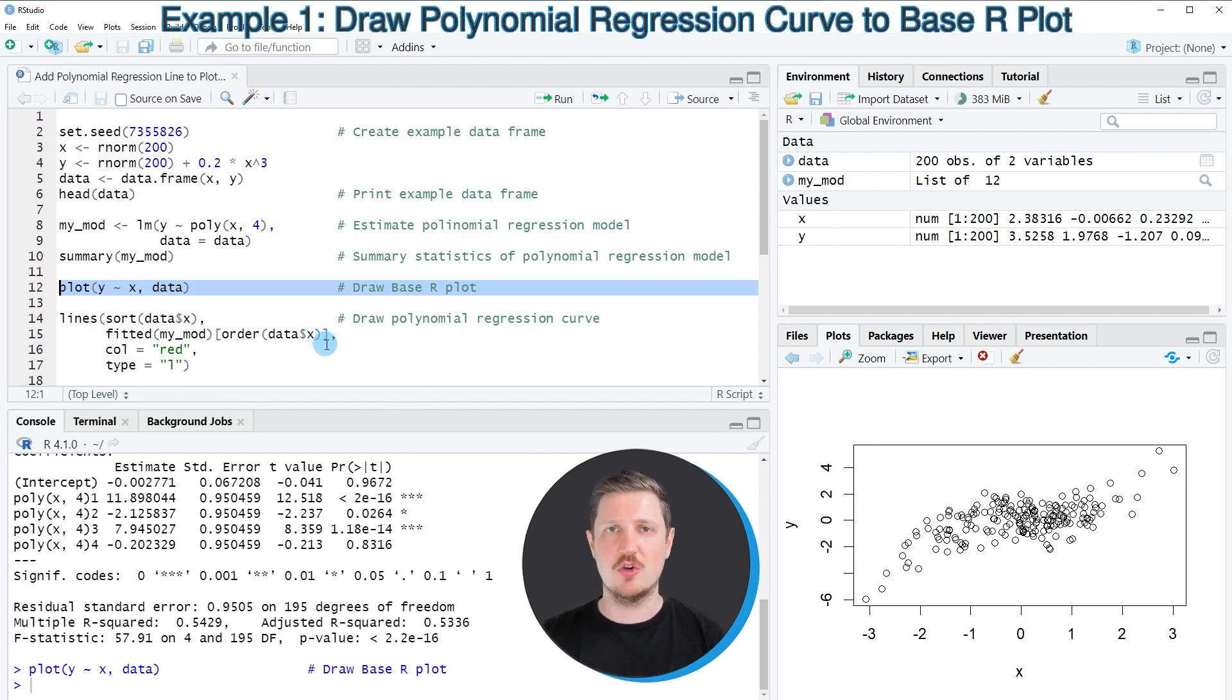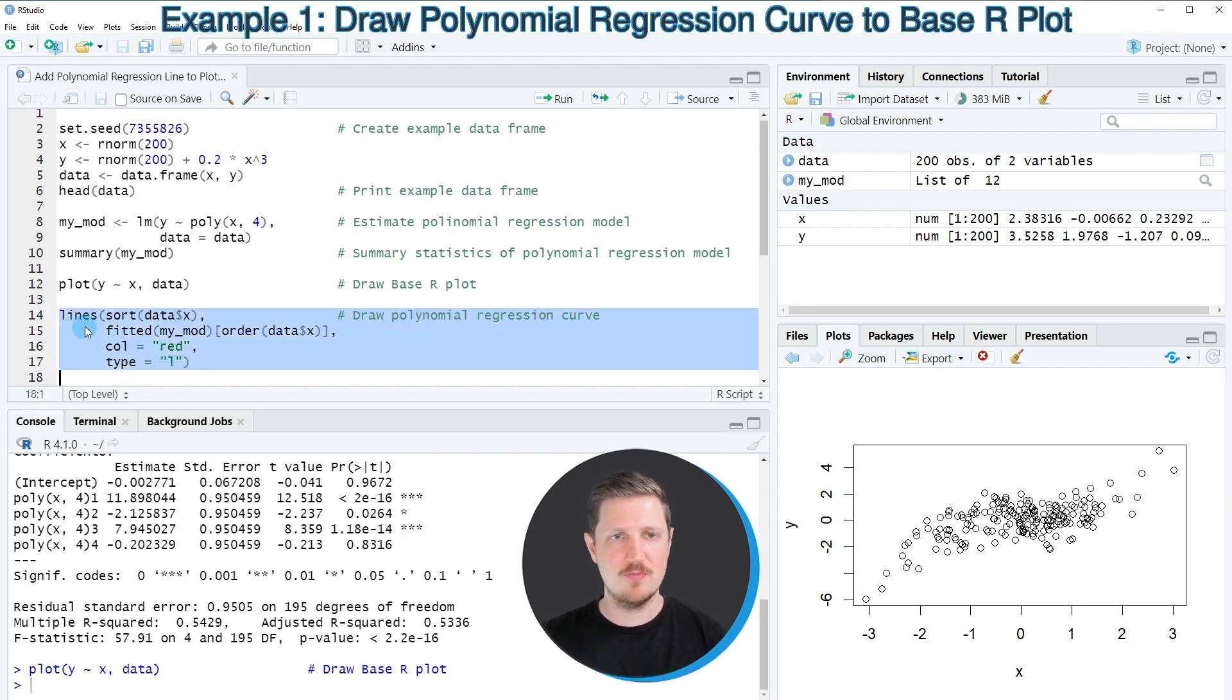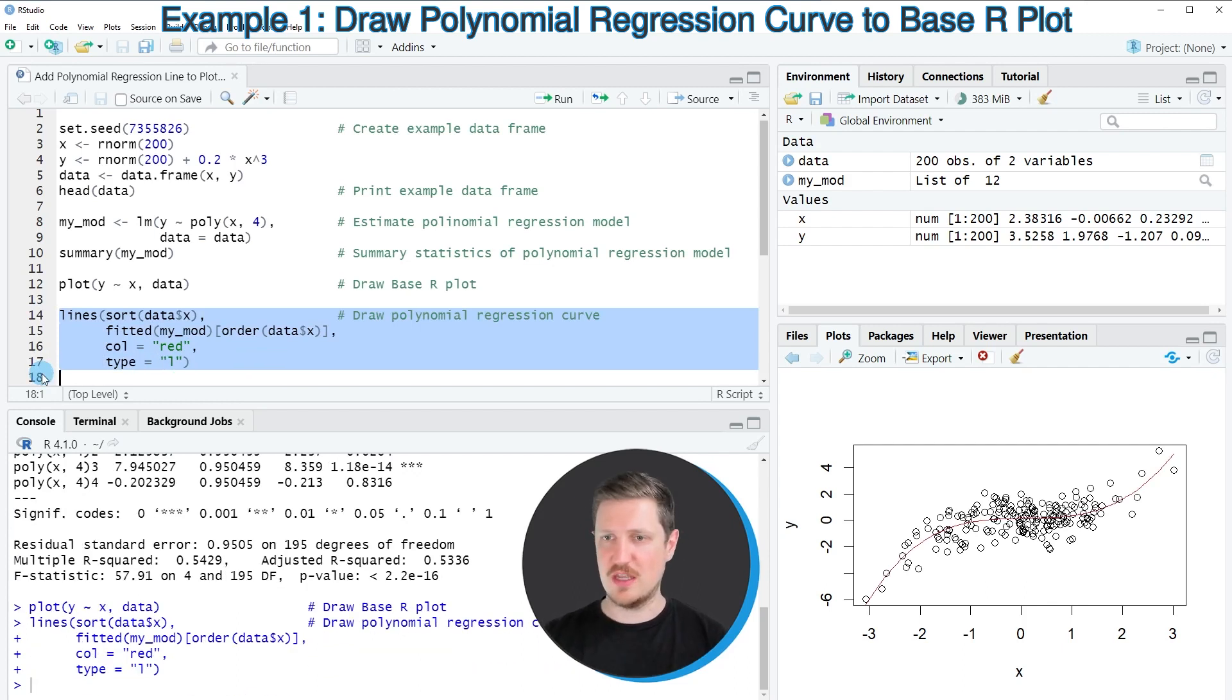And then if we want to add a polynomial regression line to this plot, we have to apply the lines function as you can see in lines 14 to 17 of the code. And within the lines function we need to apply the sorted function as you can see in line 14 of the code. You can see at the bottom right that our plot is updated and this time we have added a polynomial regression line to our plot.